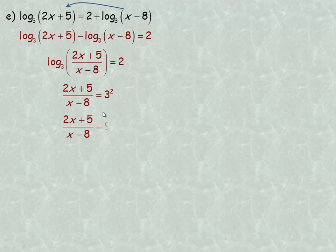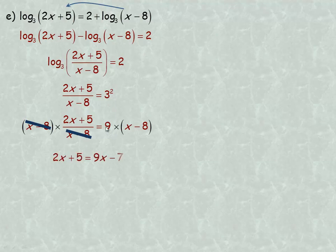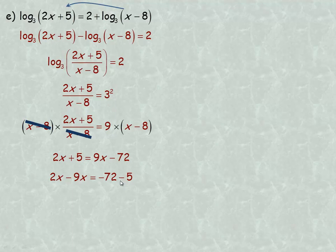This is similar to examples a and b: we rewrite in exponential form, so 3 to the power of 2 equals (2x plus 5) over (x minus 8). Of course 3 squared is 9. This is a rational expression, so multiply both sides by x minus 8 so it divides out: 2x plus 5 equals 9 times x minus 8, which gives 9x minus 72. Rearranging — bringing x terms to the left and constants to the right — gives negative 7x equals negative 77. Dividing out the negative 7, we get x equals 11.